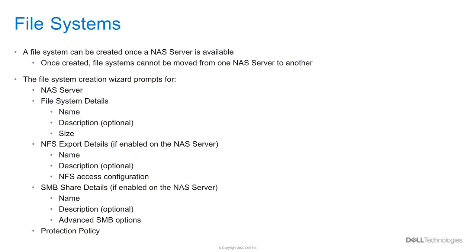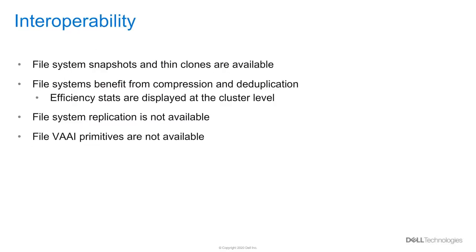To create a file system, a few things need to be specified: the NAS server, the name of the file system, and the size. Once that is done, the user can create an NFS export or SMB share, depending on what protocol or protocols are enabled on the NAS server. The user can also set a protection policy if desired. Within the file system, snapshots and thin clones can be taken. File systems benefit from compression and deduplication. Replication is not supported in file systems, nor are vVol file primitives.